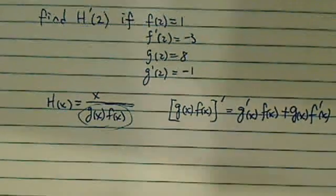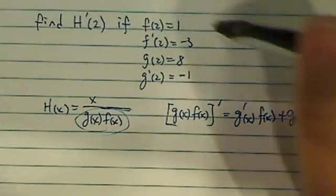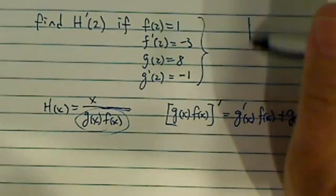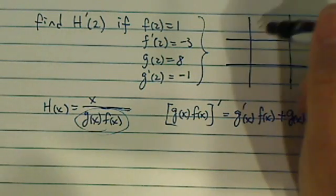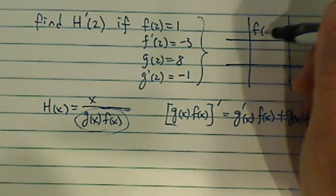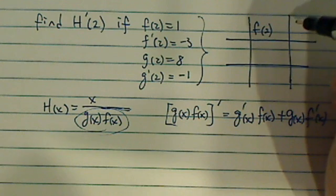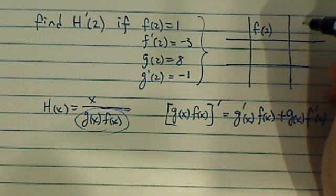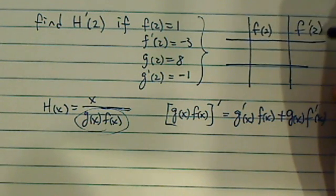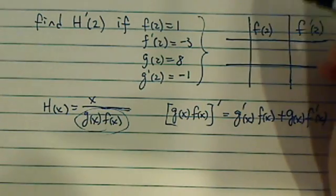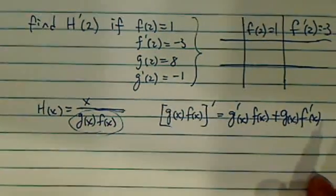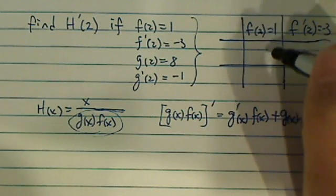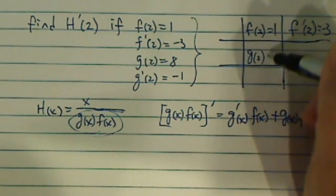Another thing that would be really helpful is if you transfer this into a table. Let's put f over here, f(2), and then f'(2). So this is equal to 1, this is equal to -3, and then g(2) is equal to 8, g'(2) is equal to -1.